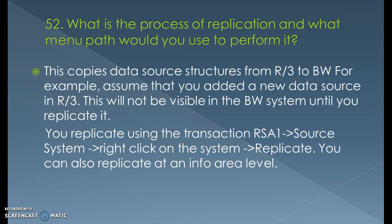What is the process of replication and what menu path do you use? Replication is the process of replicating data from the R/3 system and loading it into the BW system. Data will not be visible in BW until you replicate it. You replicate using transaction RS1 — Source System — then right-click on the system and select Replicate. You need to ensure the source system is properly connected to the BW server via RFC connection, so it gets replicated from R/3 to BW. You can also replicate to any info area level.